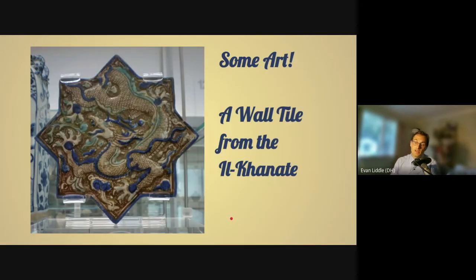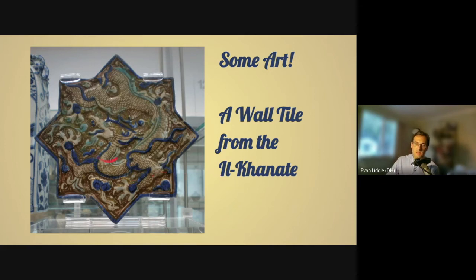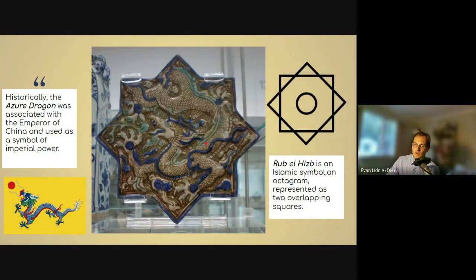Let's talk about some art. There's one piece I really love: a wall tile from a palace in what is now Azerbaijan, from the Mongol period. It shows the imperial Chinese dragon encased in an Islamic Rub al-Hizb symbol — two overlapping squares common in Islamic artwork. So you have a fusion of the azure dragon, the traditional symbol of Chinese imperial power, with an Islamic symbol — what may be the coolest piece of ceramic work I've ever seen.